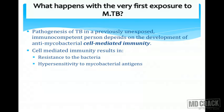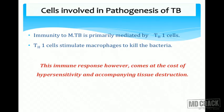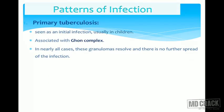With the very first exposure to Mycobacterium tuberculosis, cell-mediated immunity takes place. In previously unexposed immunocompetent persons, it depends on development of anti-mycobacterial cell-mediated immunity, mediated by T lymphocytes and macrophages. This results in resistance to the bacteria and a Type 4 hypersensitivity reaction to mycobacterial antigens. The pathogenesis is mainly mediated by T helper 1 cells, which stimulate macrophages to kill the bacteria, but this immune response comes at a cost of tissue destruction.